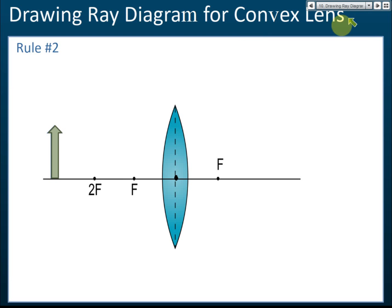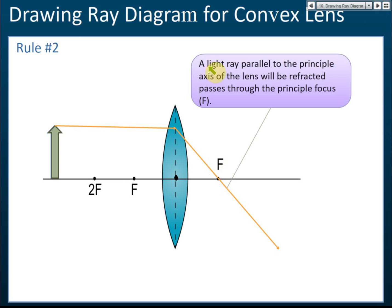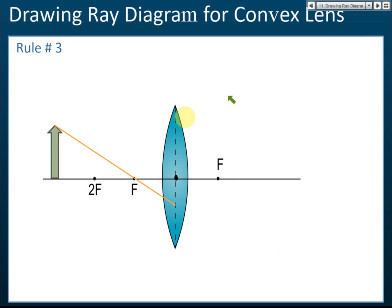Rule number two: if the light ray is parallel to the principal axis, it will be refracted and pass through the principal focus. A light ray parallel to the principal axis of the lens will be refracted and pass through the principal focus. That is rule number two.